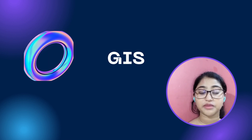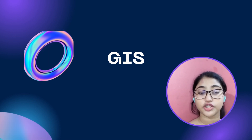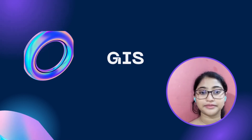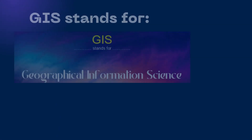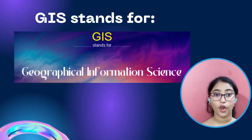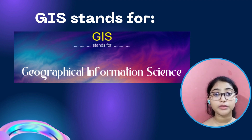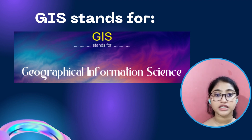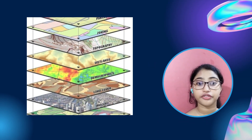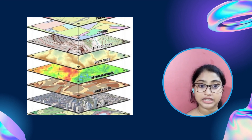So today I'll be discussing about GIS, a topic which might sound familiar to a lot of people. GIS is a short form for geographic information system, which is a computer-based tool that examines spatial relationships, patterns and trends in geography. GIS also helps to show different kinds of data on one map itself.